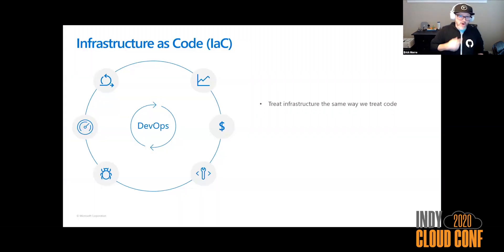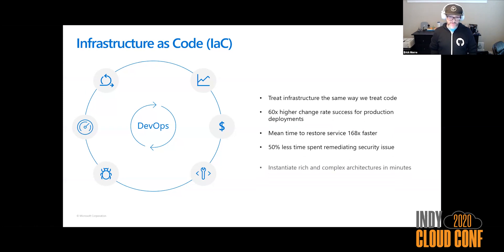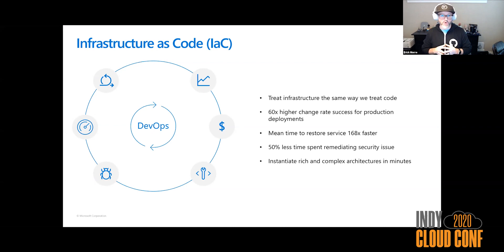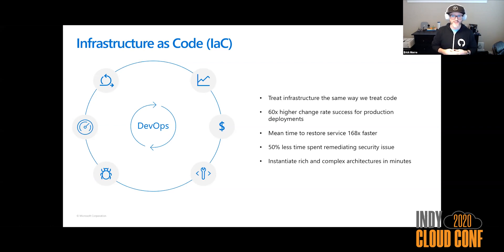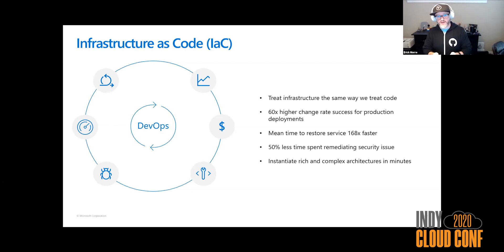Infrastructure as code — what is it? The whole idea is really tied pretty tightly to DevOps. It's born from the idea that if we could treat our infrastructure environment the same way we treat our development code, we could gain the same benefits that those teams were reaping for many years before we got to IaC. This comes from the Puppet Lab State of DevOps report, where they survey 60-70,000 plus people every year. Higher change rate success, mean time to restore service — that's related to DevOps, but it applies 100% to infrastructure as code.